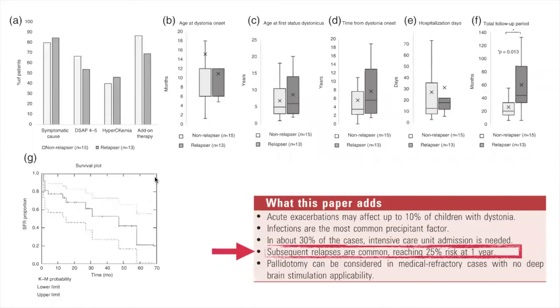Another challenging issue in the management of status dystonicus is the relapse risk after the first episode. We calculated the relapse risk at one year to be 25%. However, we did not find any correlation between the relapse and no-relapse groups with respect to age of dystonia onset, age at first status dystonicus, time from dystonia onset, or hospitalization days. The total follow-up period was longer in the relapse group, possibly due to the greater severity of dystonia in those patients.